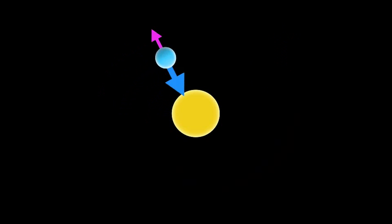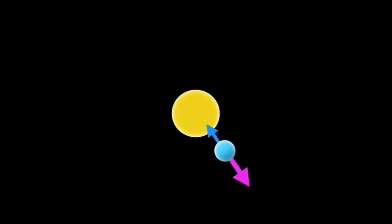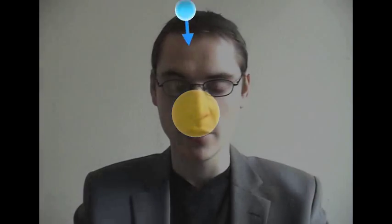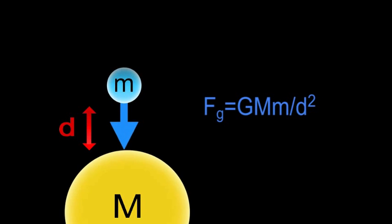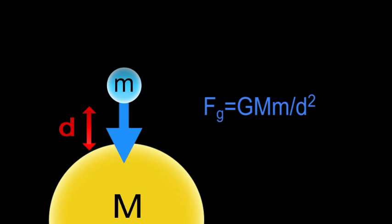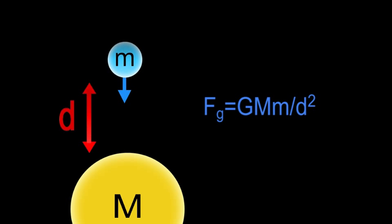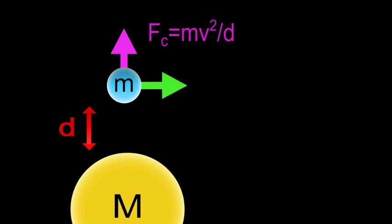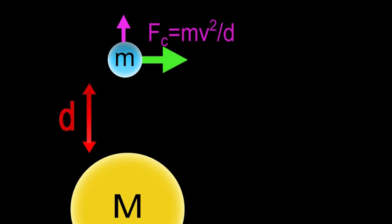If the gravitational force were to exceed the centripetal force, the smaller object would keep spiraling towards the bigger one until the two collide. Whereas if the centripetal force were to exceed, the smaller object would keep moving away from the bigger one until they were both out of sight — and that would not be orbit. The gravitational force depends on the mass of the bigger object as well as the square of the distance between the two objects. The centripetal force depends on the distance between the two objects and the velocity of the smaller object — a greater velocity means a greater centripetal force.